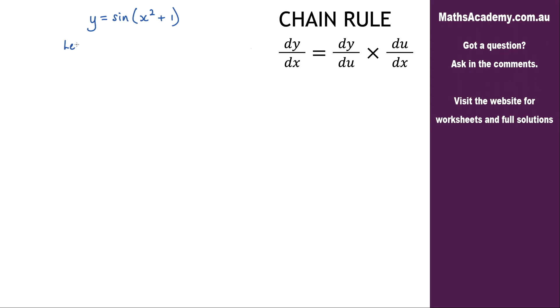The first step is to make the substitution. So let u equal x squared plus 1. Now I can go ahead and differentiate that. So du by dx is equal to 2x.